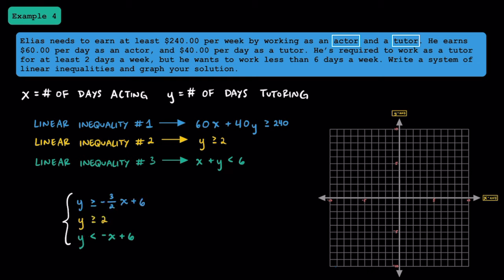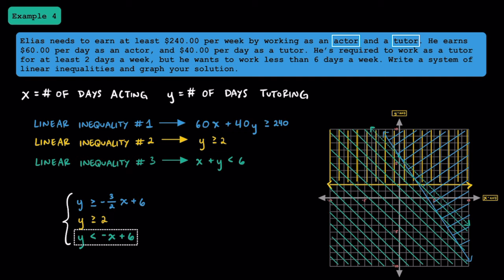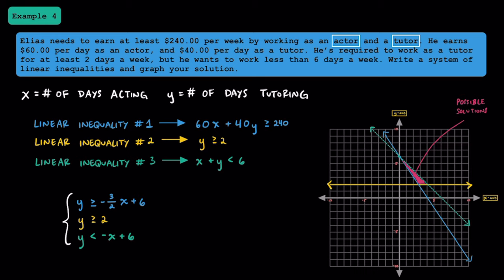Now let's graph each of these linear inequalities. For the first one we're going to have a solid line shaded away from (0, 0). For the second inequality we're going to have a solid horizontal line and shade above it since (0, 0) doesn't work. For the last one we graph the third inequality. This pink triangle formed from the three linear inequalities represents all the solutions for the system. One possible solution is (2, 3): to satisfy these conditions, Elias could work two days acting and three days tutoring.